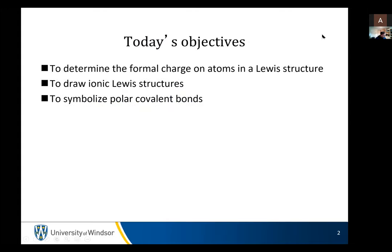Hopefully this is mostly going to be review for the vast majority of you. So again, just to summarize, what we're going to make sure we can do is: determine formal charges on atoms that have a Lewis structure, draw ionic structures, discuss polar covalent bonds. This might be the first time in this class where you see anything different. And then we're going to start talking about resonance — for some of you that is completely new, and for some of you, you will have had some exposure to it.